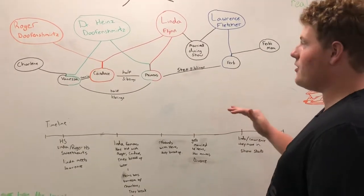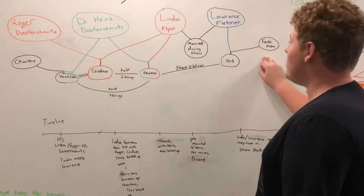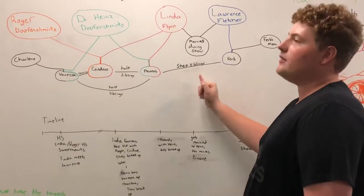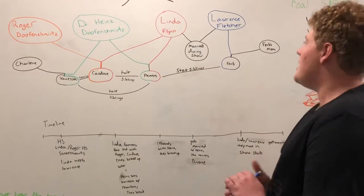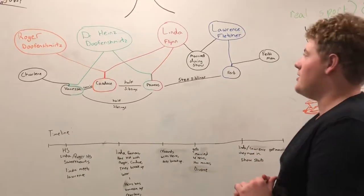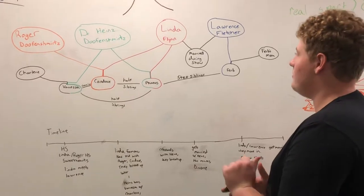They decide to get married, and the show starts. That is when we first see the show. Ferb's mom is unknown, but they're obviously the parents of Ferb. Ferb and Phineas are not blood-related, they are simply just step-siblings. Dr. Hines Doofenshmirtz has two kids on the show, Roger has one, Linda has two.